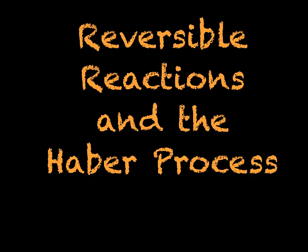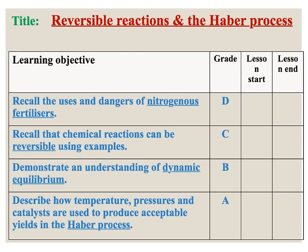This is the 8th video in the Edexcel C3 revision tutorial series. Today we'll be looking at reversible reactions as well as the Haber process. In this tutorial we will look at the uses and dangers of nitrogenous fertilisers, how chemical reactions can be reversible, what we mean by dynamic equilibrium, and how temperature, pressures and catalysts can be used to produce acceptable yields in the Haber process.